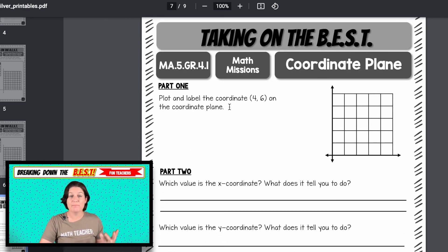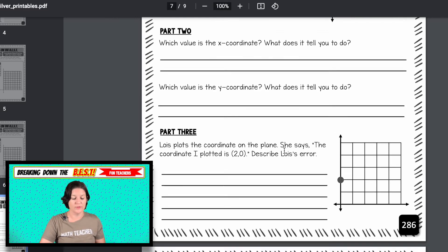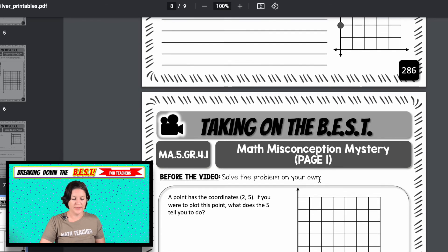And then you also have a math mission right here, which is like a math task. This one says to plot and label the coordinate (4, 6) on the coordinate plane, which value is the X coordinate? What does it tell you to do? Which value is the Y coordinate? What does it tell you to do? And here is an error analysis right there.